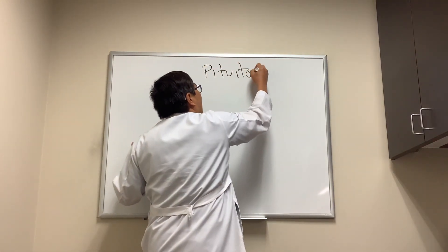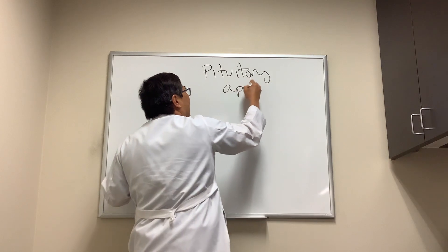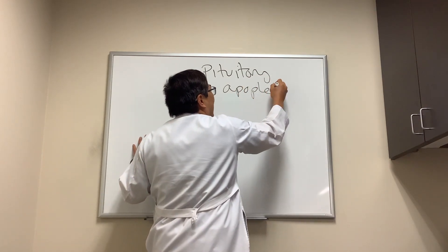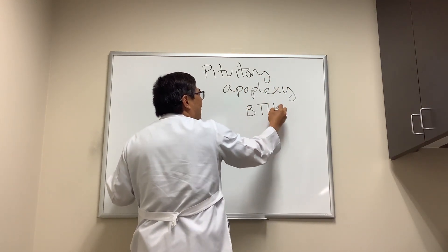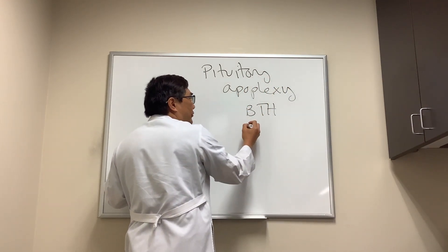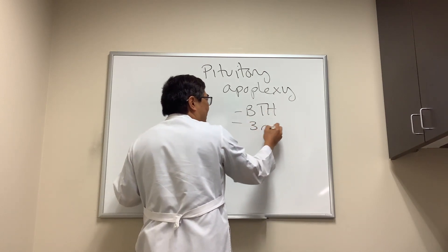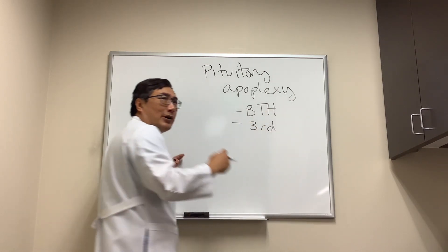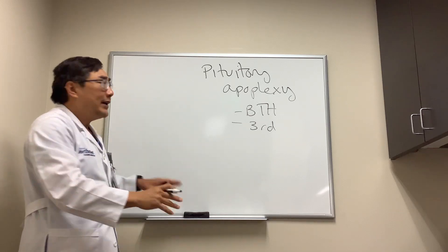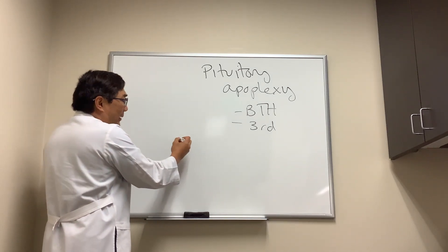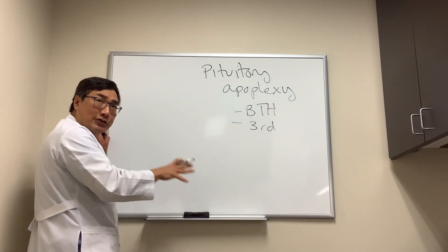One of our fellows wanted to know about pituitary apoplexy — why it presents with bitemporal hemianopsia, and if it produces efferent rather than afferent disease, why it preferentially causes third nerve palsy instead of sixth or fourth. To answer this question you need to know a little bit about the anatomy of the sella turcica.